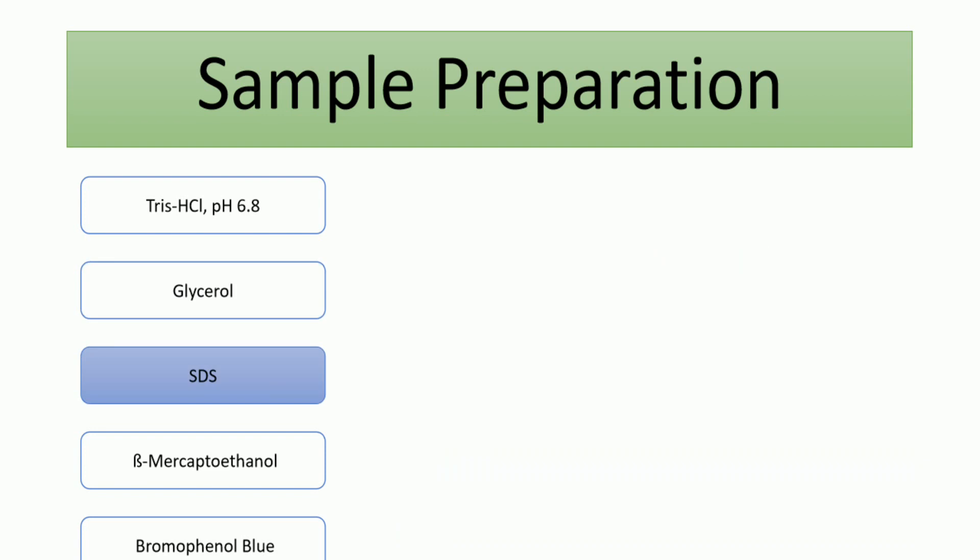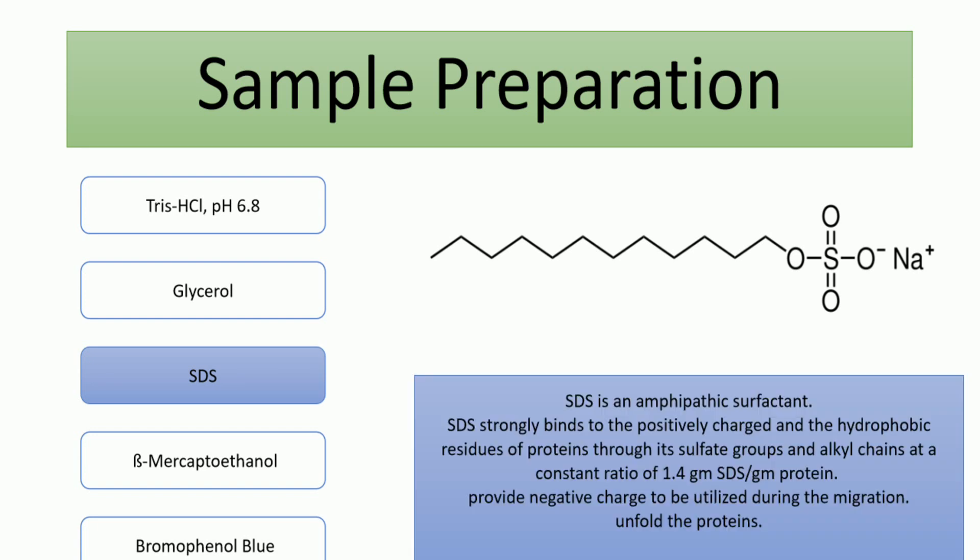We also have SDS, which is the main chemical in this step. It's an amphipathic surfactant, which means it has two portions: one polar and another non-polar. It can bind to the positively charged residues and also deals with the hydrophobic portions in the protein, straightening the whole protein and providing all proteins with the same negative ratio, which is 1.4 grams of SDS for 1 gram of protein. Hence, it provides the same charge-to-mass ratio for different proteins.